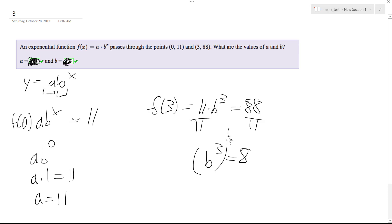And if you take the cube root of both sides, what you end up with is b is equal to 2. So in this instance, it's going to be 11 times 2 raised to the x, or a is equal to 11, and b is equal to 2.